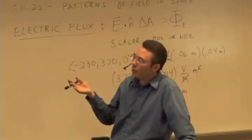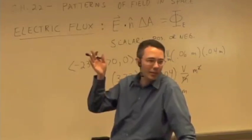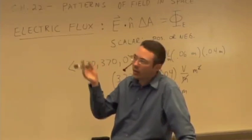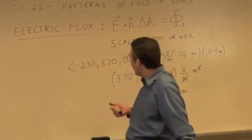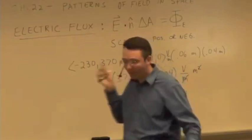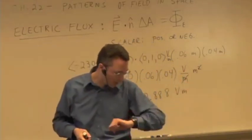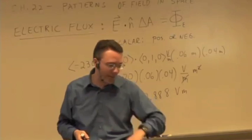And then the components would have to be, for n-hat would have to be in the positive y direction. It would be 0, 1, 0 again. But there's another way to calculate it based on the other way of calculating dot products, and let's go another 15 seconds here to try that.